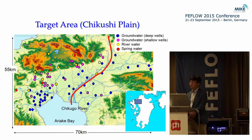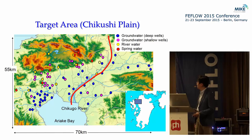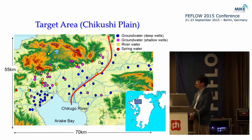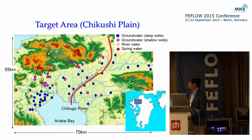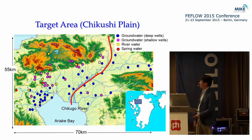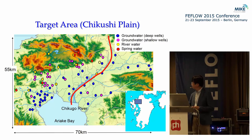This map shows the target area of our research, carried out around eight years ago, located in Kyushu Island, the west part of Japan. The size of the target area is 70 km by 55 km. We performed a field survey of groundwater at around 50 points, measuring vertical temperature profiles and groundwater levels. We also took samples from rivers and springs to check water quality, analyzing ion concentrations and isotopes as important data for modeling the groundwater flow.